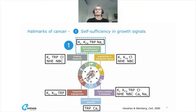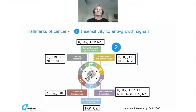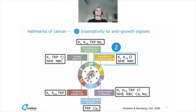Going clockwise from the top of the figure, the first hallmark of cancer is self-sufficiency in growth signals — how cancer cells generate and maintain their own growth cycles by making and secreting cell division and growth signals. The second hallmark is insensitivity to anti-growth signals: the usual checks and balances in cell tissues, like contact and pressure inhibition, are lost or overwritten in cancer.